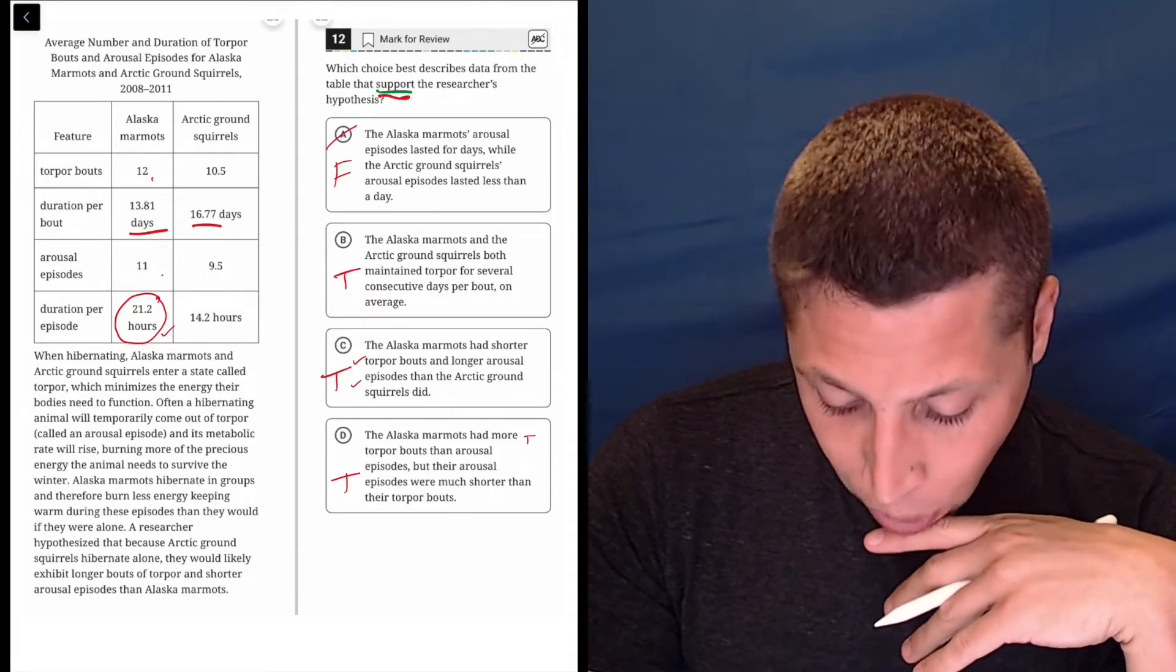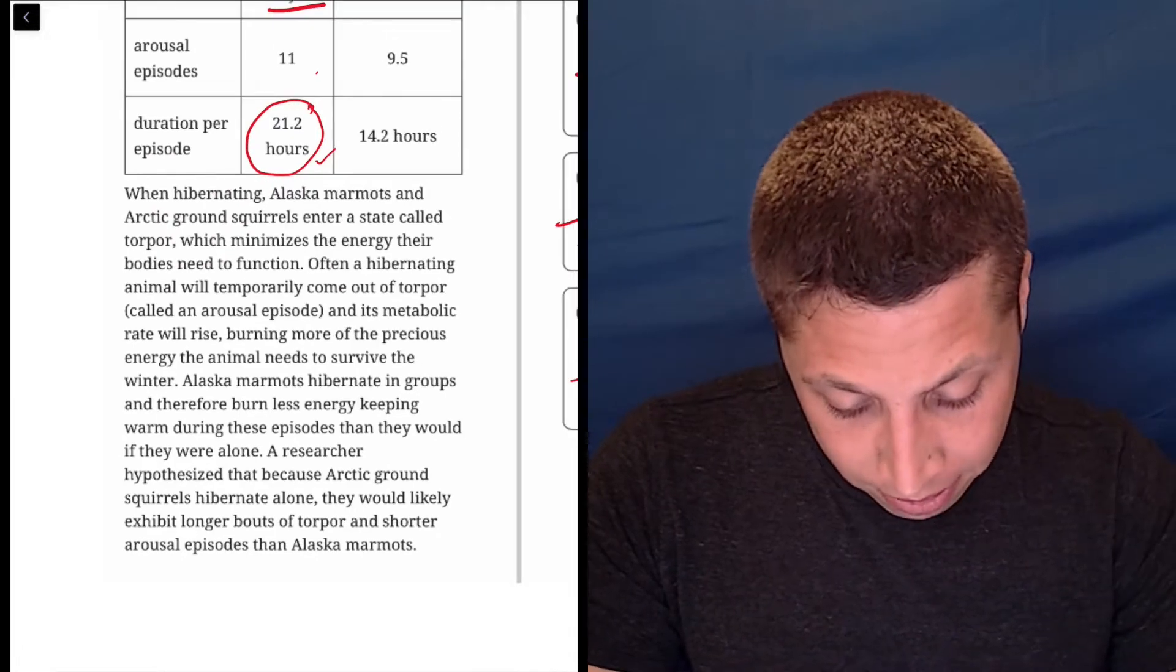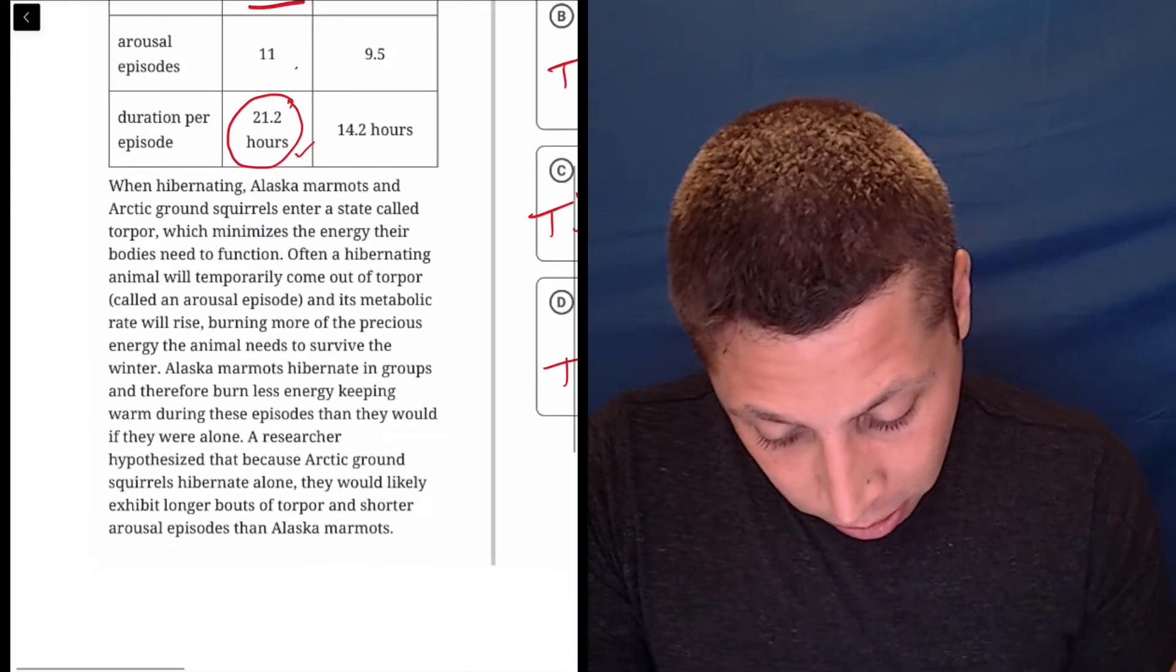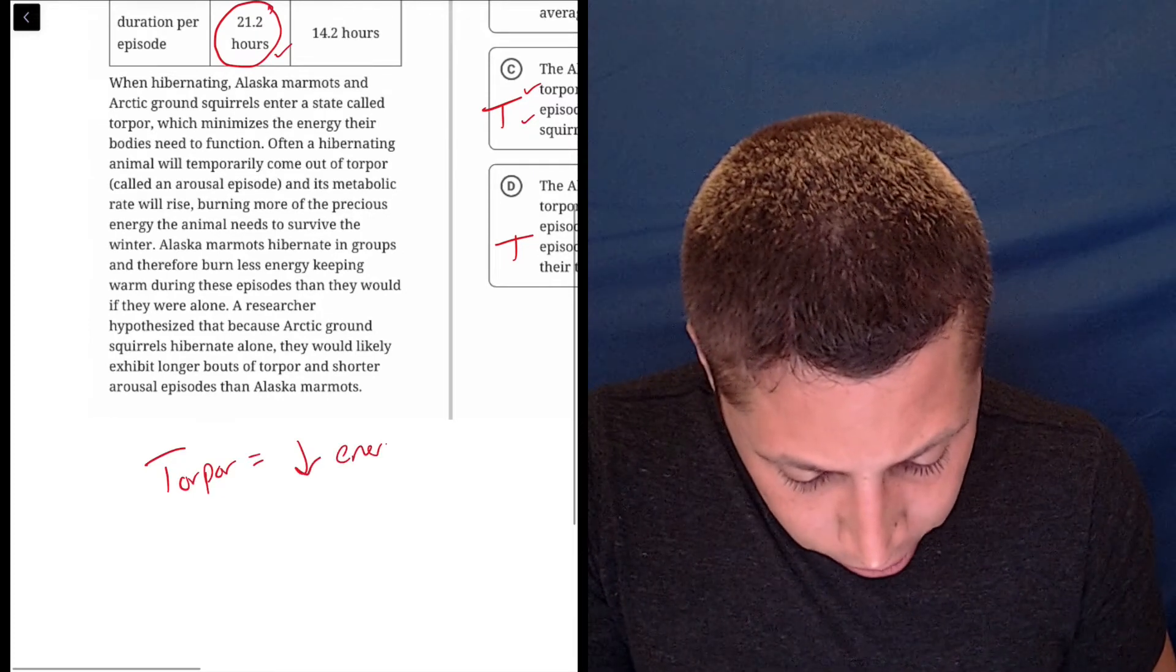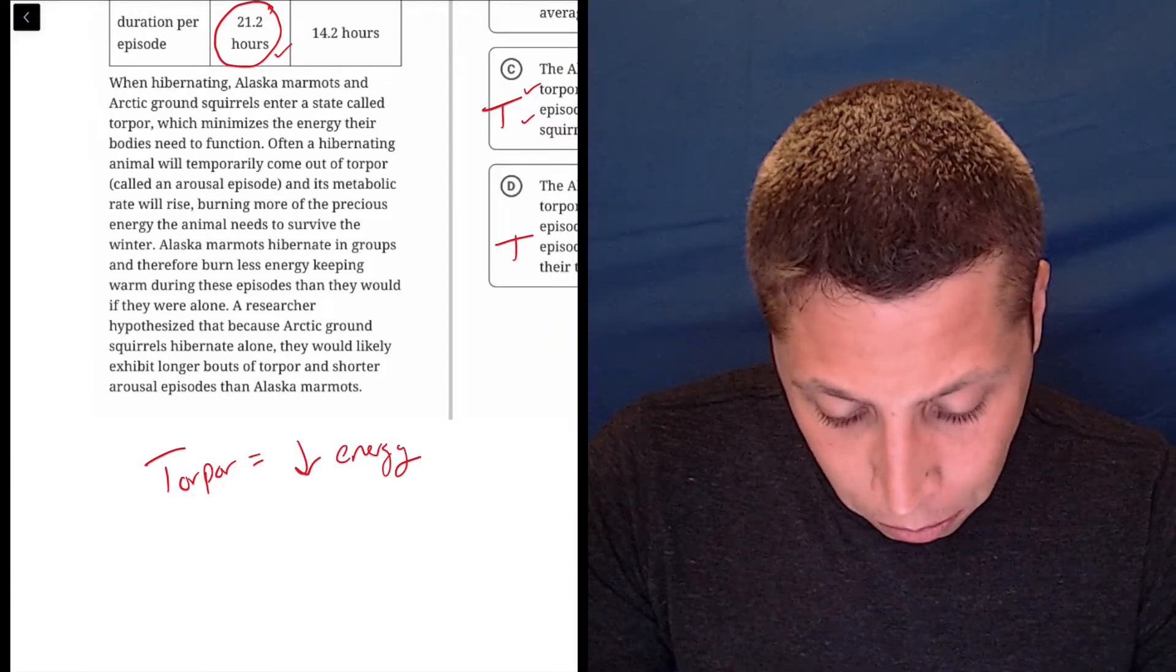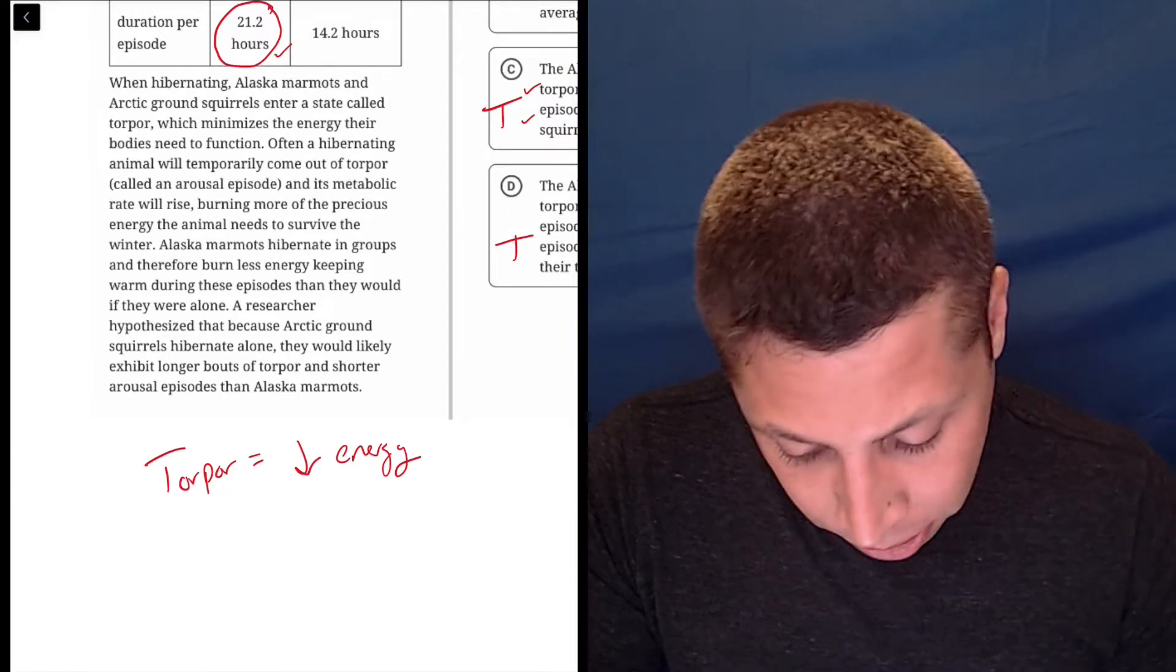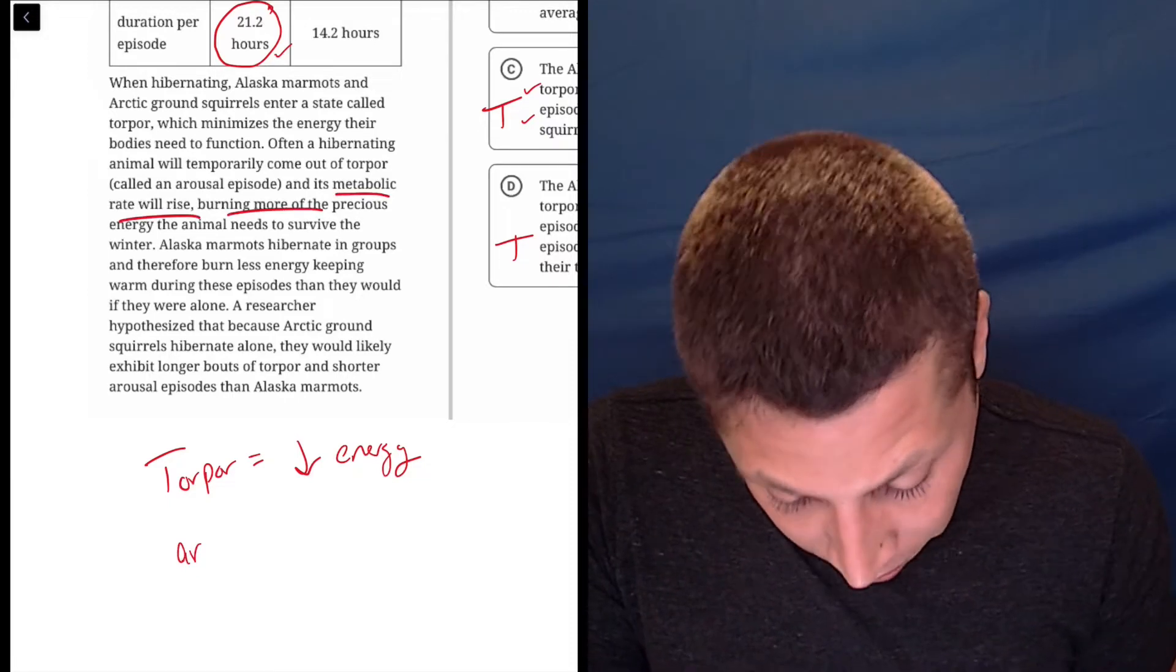What is it? When hibernating Alaska marmots and arctic ground squirrels enter a state called torpor, which minimizes the energy their bodies need to function. So I might write this, torpor equals low energy. Often a hibernating animal will temporarily come out of torpor, called an arousal episode, and its metabolic rate will rise, burning more of the precious energy.